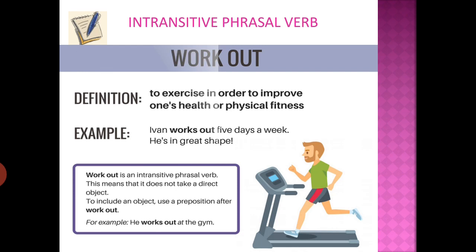An example of an intransitive phrasal verb: 'Ivan works out five days a week — he is in great shape.' 'Works out' means to exercise in order to improve one's health or physical fitness. This intransitive phrasal verb does not carry any object, but if you intend to include an object, you must use a preposition after the phrasal verb, such as 'He works out at the gym.'